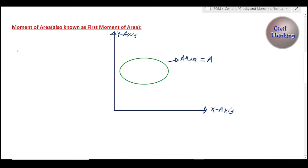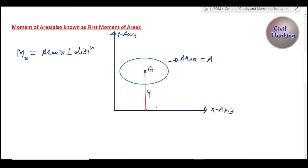The first moment of area is Mx, which means moment of the whole area with respect to the x-axis. Mx is equal to area multiplied by perpendicular distance. Now let's assume this is the centroid or center of gravity of this area, denoted by G. The distance between this centroid and the x-axis is y-bar. So Mx equals A multiplied by y-bar. This is the first moment of area about the x-axis.